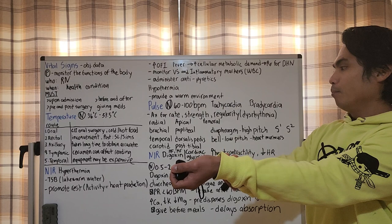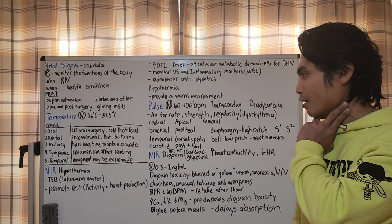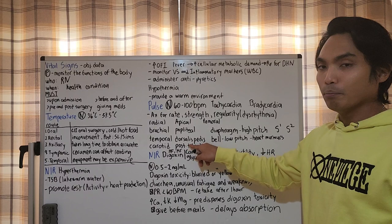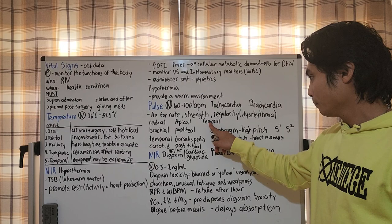There are nine pulse sites all over the body: radial, brachial, temporal, carotid, apical, popliteal behind our knee, dorsalis pedis and posterior tibial in your foot, and femoral in the legs.